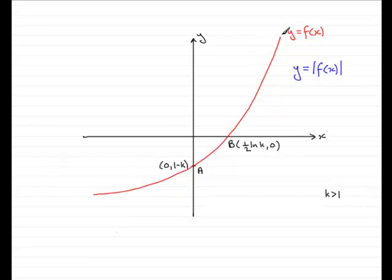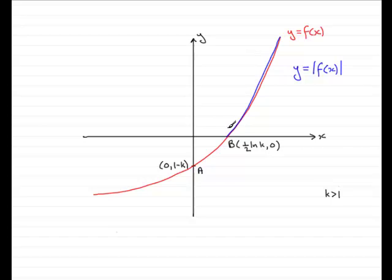All the y-values down this stretch of the curve are positive, so that's okay — we're going to have a curve coming down through here like so. This is meant to be on top of the red one. But when we get these values here, y is negative, and what we've got to do is make them positive. So this part of the curve is reflected in the x-axis.